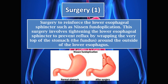We also have surgical interventions to treat GERD. One surgical option is to reinforce the lower esophageal sphincter with a procedure called Nissen fundoplication. This surgery involves tightening the LES to prevent reflux by wrapping the very top of the stomach — the fundus — around the outside of the lower esophagus. On the left you can see a normal stomach, and on the right the post-operative result where the fundus wrapped around creates an anti-reflux mechanism.